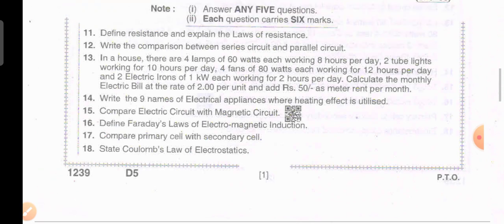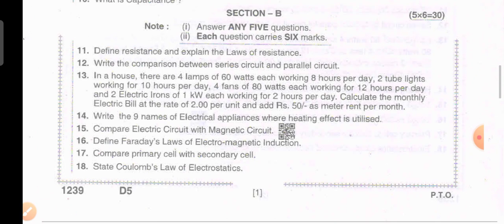Define resistance and explain the laws of resistance. Write the comparison between series circuit and parallel circuit. In a house, there are 4 lamps of 60 watts each working 8 hours per day, tube lights working for 10 hours per day, 4 fans of 80 watts each working for 12 hours per day, and electric irons of 1 kW each working for 2 hours per day. Calculate the monthly electric bill at the rate of 2 rupees per unit and add 50 rupees as meter rent per month.